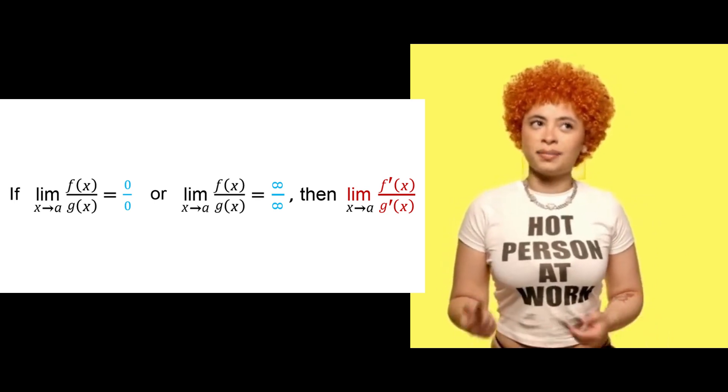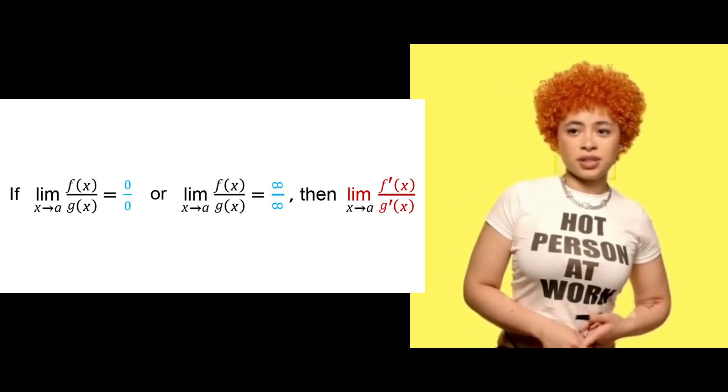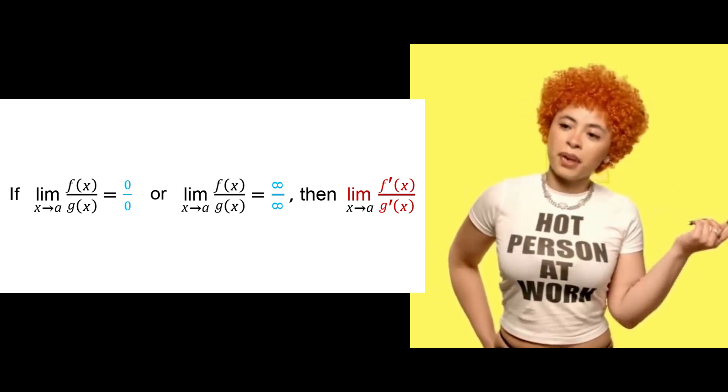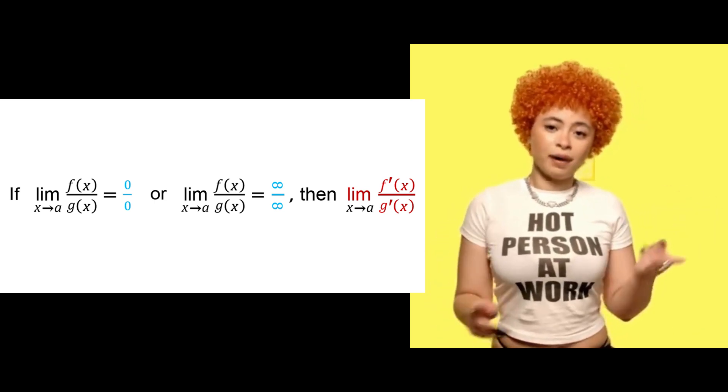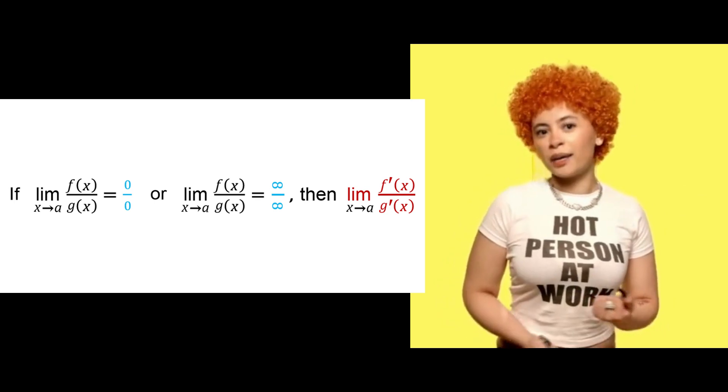I'll show you, Trav. So right now there's nothing we can do. However, I want to teach you something called L'Hôpital's Rule. This states that if plugging in the x value yields 0 over 0 or infinity over infinity, we can take the derivative of both the top and the bottom functions and try to evaluate the limit again.